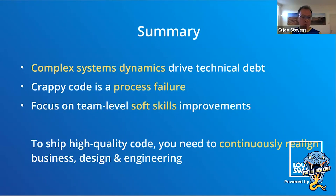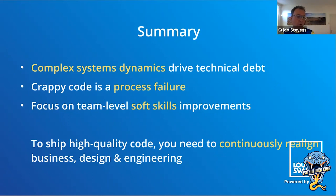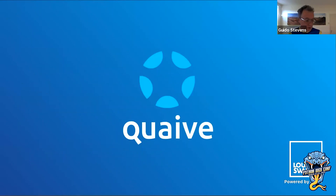Let me quickly summarize what we went over. The goal is not to be perfect because we are not, but it is a feasible goal to be improving continuously. Technical debt is driven by complex systems dynamics, and without solid foundations you will be overwhelmed by technical debt in the long run. CI and CD is necessary but insufficient. Fighting technical debt through better engineering faces diminishing returns. Crappy code is a process failure much more than a technical failure, and we need to focus on soft skills improvements to move towards high quality code and architectures that match business and design requirements. To code high quality software, you need to continuously realign engineering with business and design.